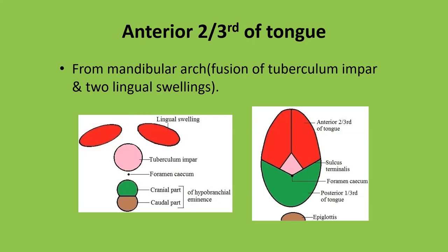An important point: the development of the anterior two-thirds of the tongue is from the mandibular arch, which is the only arch having a dual nerve supply. The post-trematic nerve of the arch is the lingual nerve, while the pre-trematic nerve is the chorda tympani. So the nerve supply is reflected in the development — the anterior two-thirds of the tongue has a dual nerve supply by the lingual nerve and the chorda tympani nerve.